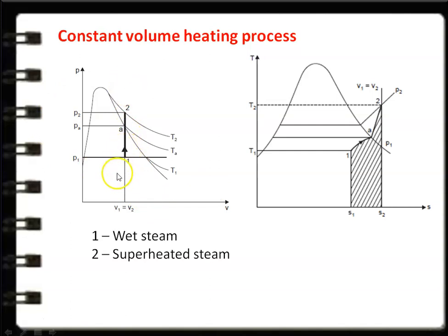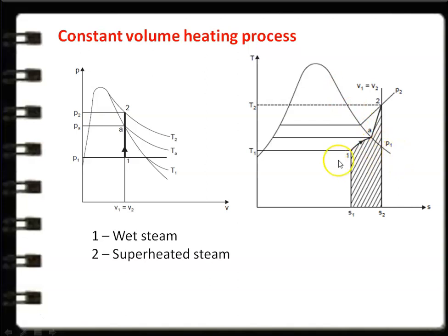Point 1 is the wet steam. When you add heat energy, the quality of the steam increases, and at the end of the heating process the steam becomes superheated steam. In the temperature-entropy diagram, we again have the saturation line — the saturated liquid line, the critical point, and the saturated vapour line. The initial condition is wet steam, and the constant volume line goes from 1 to A (up to the saturation point), then from A to 2 in the superheated region.